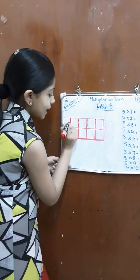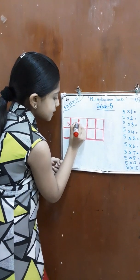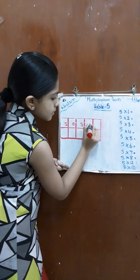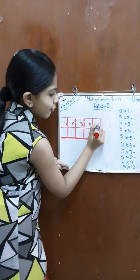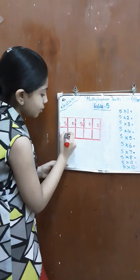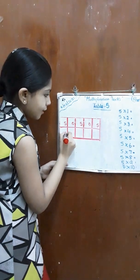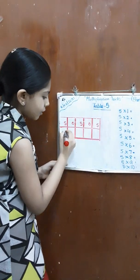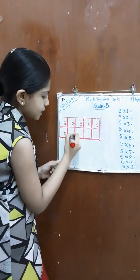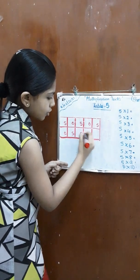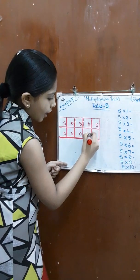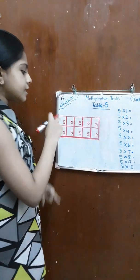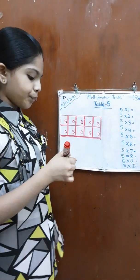So let's write 5, 0, 5, 0, 5 in the top row. Same thing on the bottom row — 5, 0, 5, 0, 5, 0. It should start with 5 and end with 0.